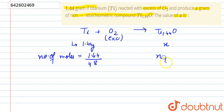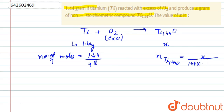For titanium oxide Ti₁.₄₄O, the number of moles will be x — the given weight — divided by the total molar mass, which is 1.44 times the atomic mass of titanium (48) plus 16. This expression gives us the number of moles of titanium oxide.